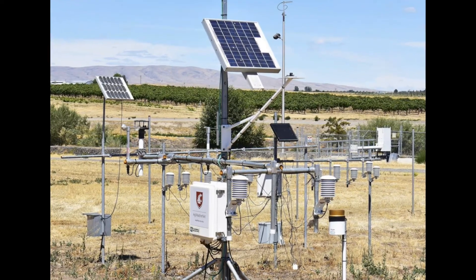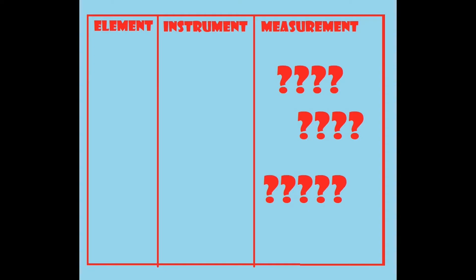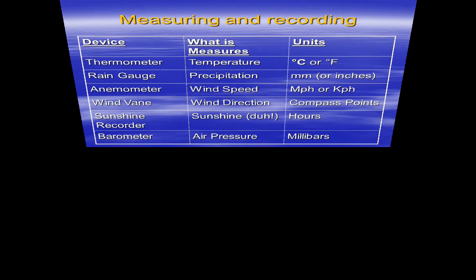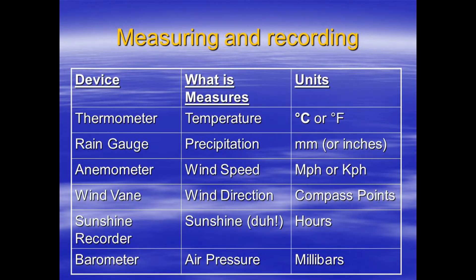Each weather element has its own instrument, and each instrument has its own unit of measurement. For example, the thermometer — its unit of measurement would be Celsius or Fahrenheit. In some cases, in some labs, you might have Kelvin, but the more popular ones are Celsius and Fahrenheit. The barometer's unit of measurement is the millibar. The unit of measurement for the rain gauge would either be inches or millimeters — and yes, I said millimeters, not milliliters.